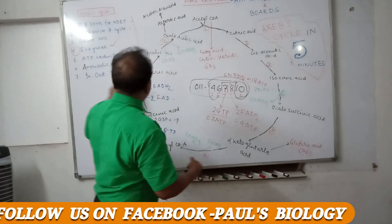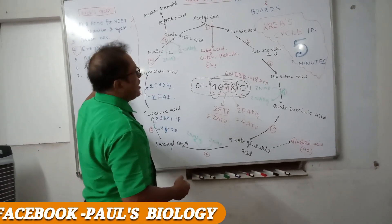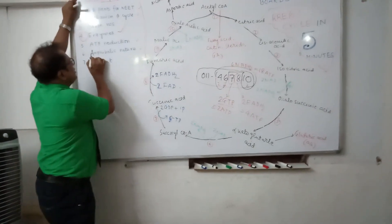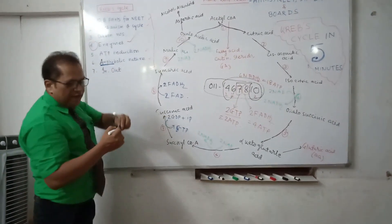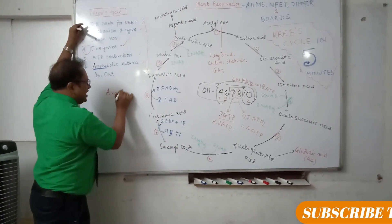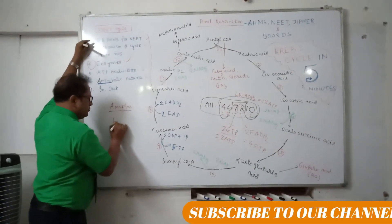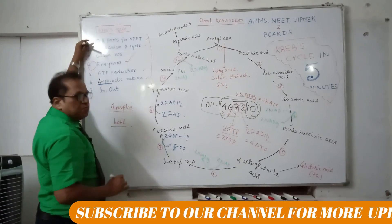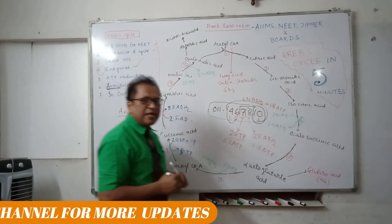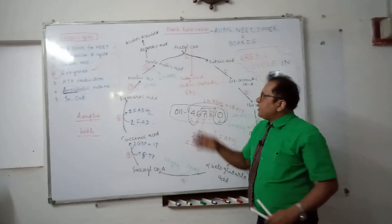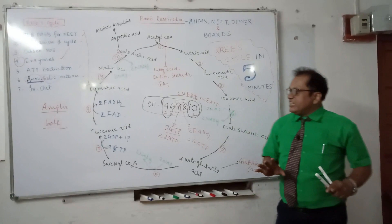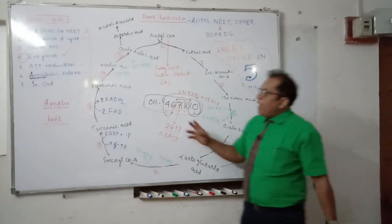Now another important thing: why is the Krebs cycle called amphibolic in nature? What is the meaning of 'amphi'? Amphi means both. So amphibolic means both — anabolic plus catabolic.